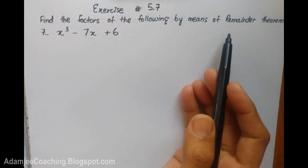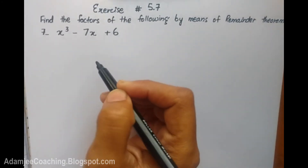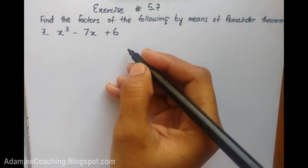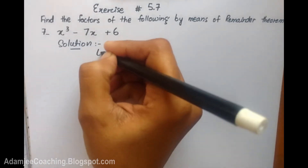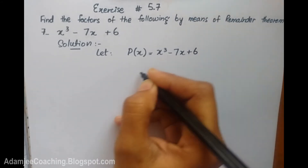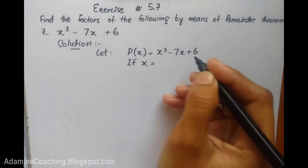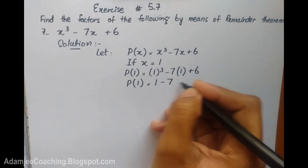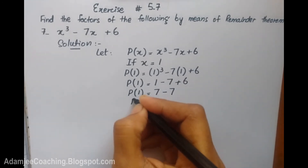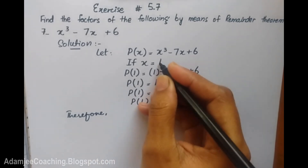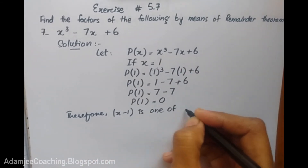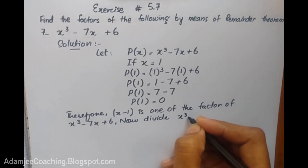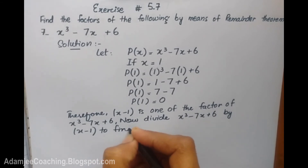Exercise 5.7: find the factors of the following by means of the Remainder Theorem. We have p(x) equals x cube minus 7x plus 6. We find the whole polynomial at the x value; if the answer is zero, it means it is a factor. Let p(x) equal x cube minus 7x plus 6. We put x equals 1: p(1) equals 1 minus 7 plus 6 equals 0. So x minus 1 is one factor of x cube minus 7x plus 6.